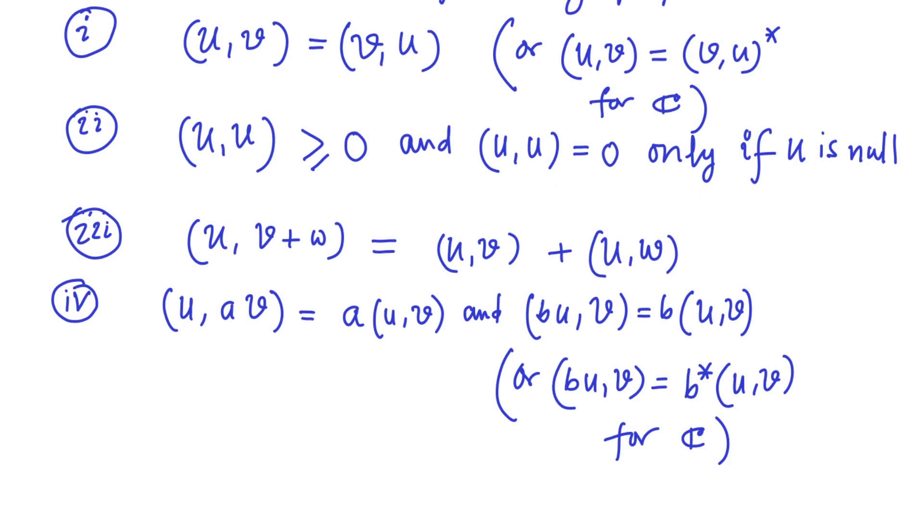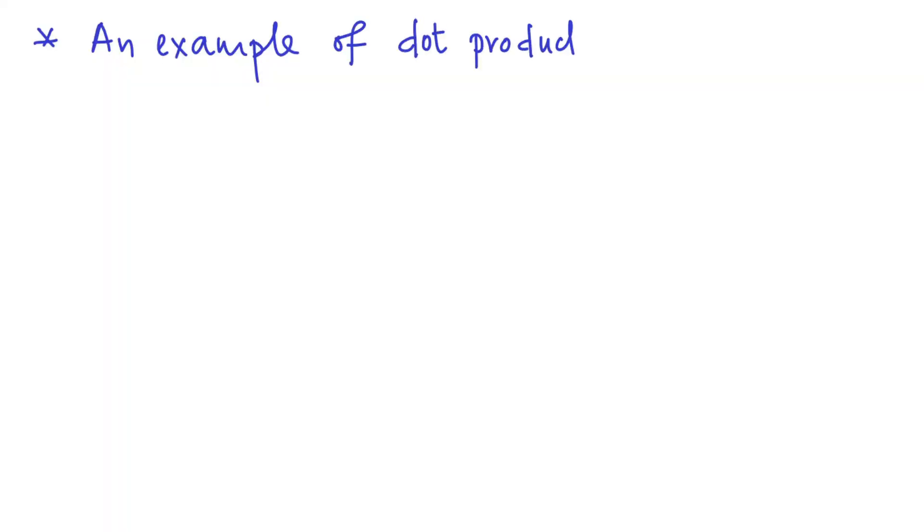In other words, inner product or dot product is a map which takes two vectors and gives one number — either a real or complex number depending on the type of vector space — and the map must satisfy four properties. When all four properties are satisfied, we call the map an inner product or dot product. Now let us consider an example.